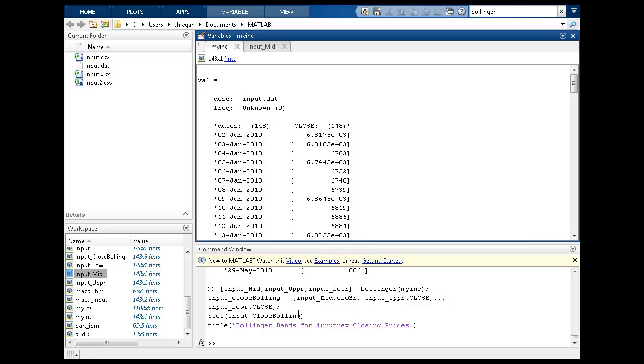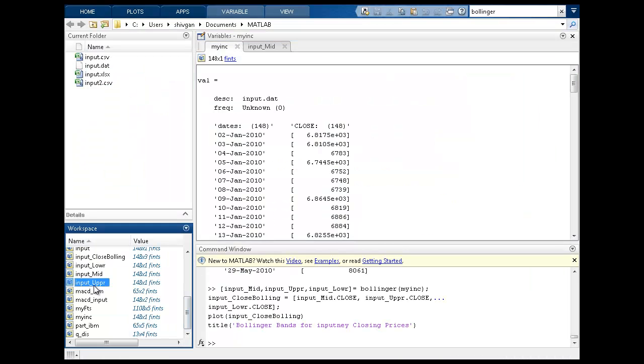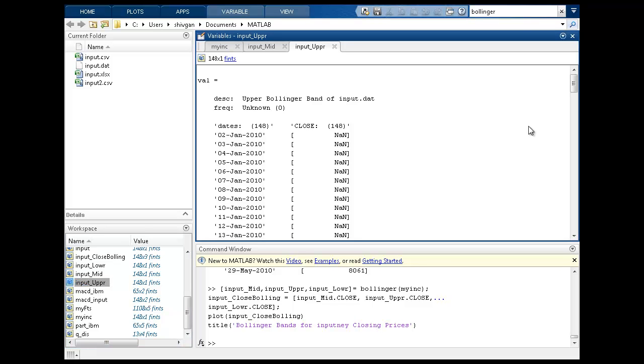Once you have that financial time series in the good format, then creating all of this becomes easy. To get this out of the system, you can export this financial time series object and save it as a CSV, which would be the next one.